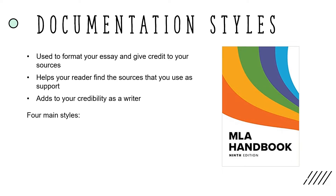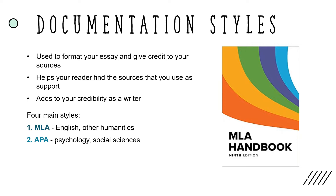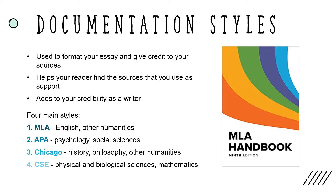There are four main styles each used for particular disciplines: MLA, most commonly used in English and other humanities; APA, used in psychology and social sciences; Chicago, used in history, philosophy, and other humanities; and CSE, used in physical and biological sciences and in mathematics. In this presentation, we'll be focusing on using MLA style, or the Modern Language Association.